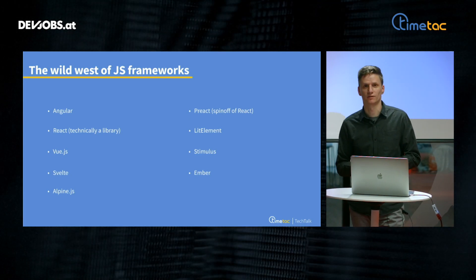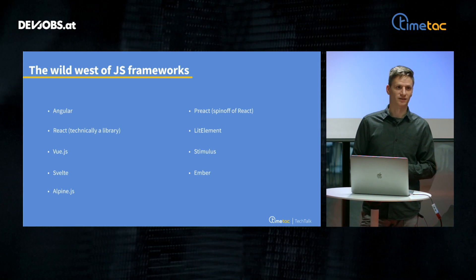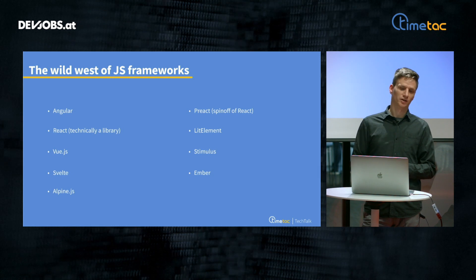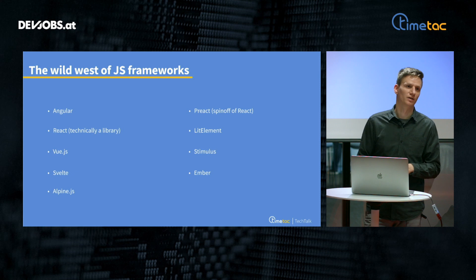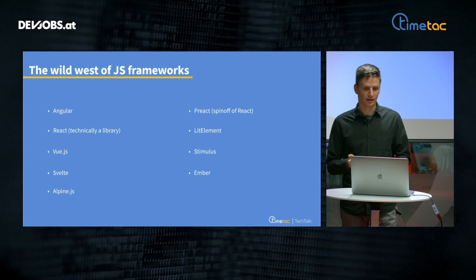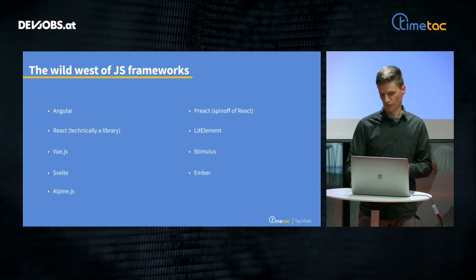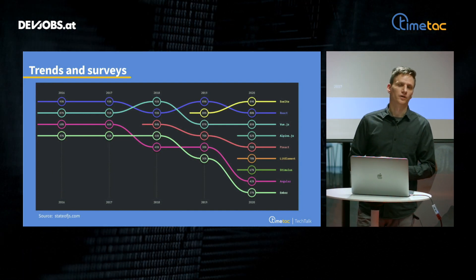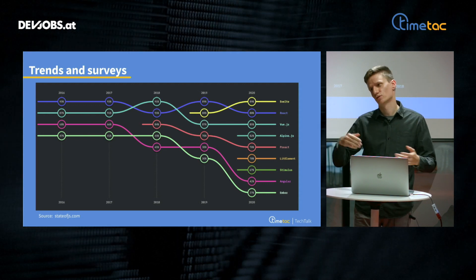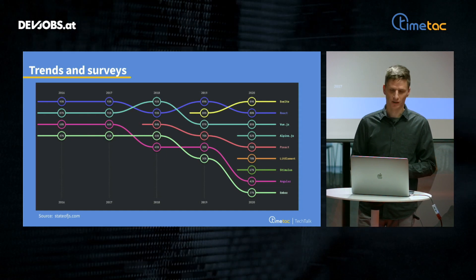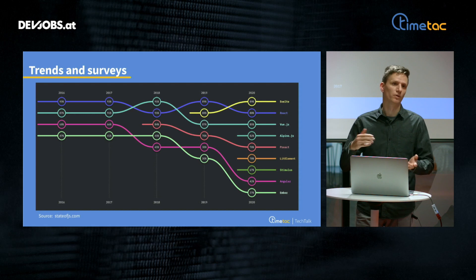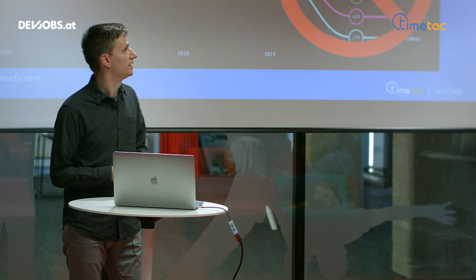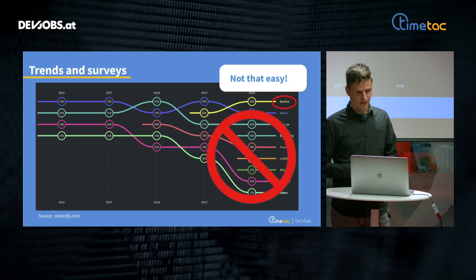Anyone working with front-end frameworks probably knows there are as many frameworks as there are developers. So how should we pick the right one? Depending on the project, most probably we'll be looking at mainstream frameworks. I would suggest that trends and surveys are a good starting point. Stateofjs.com does yearly surveys — they ask developers what they want to work with, what they're working with, which frameworks they enjoy or hate, how popular frameworks are, and how big the community is. If you look at the graph, we can clearly see the winner. That said, it's not that easy, but it gives you a rough outline of where the future goes and where developer knowledge is moving.